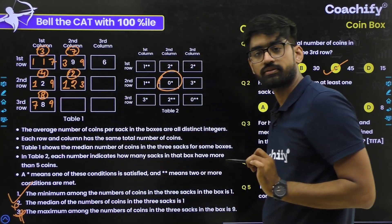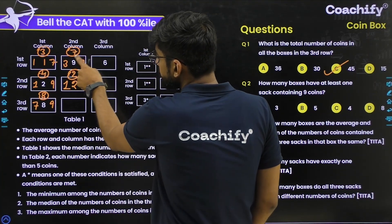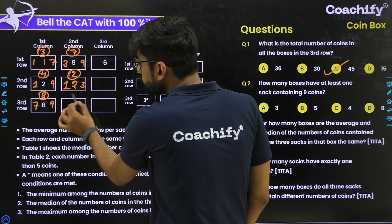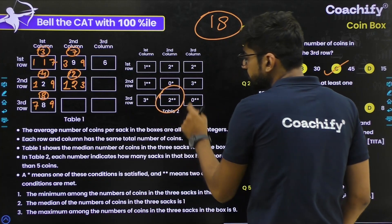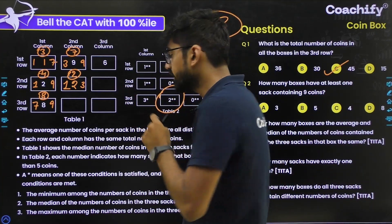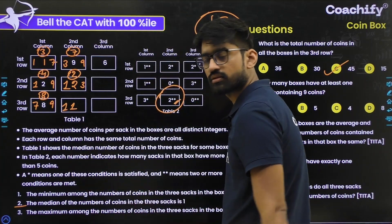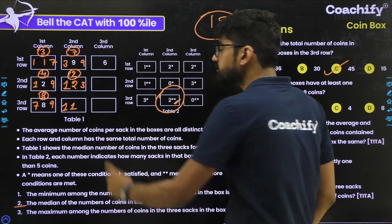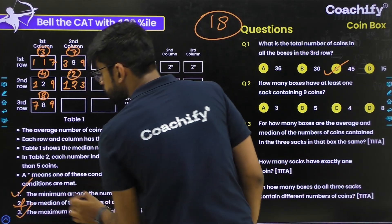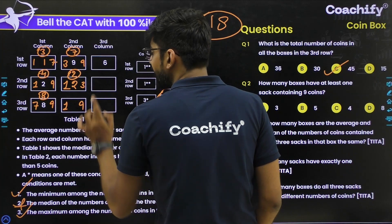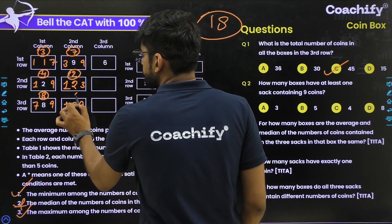For the next box, column sum must be 45. With averages 7 and 2 giving sums 21 and 6, the remaining sum is 18. With two sacks above 5 and two stars, median = 1 is impossible since we can't reach sum 18. So maximum = 9 and minimum = 1 are both true, making median = 8. Coins are 1, 8, 9; sum = 18; average = 6.